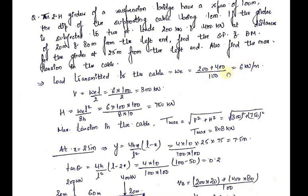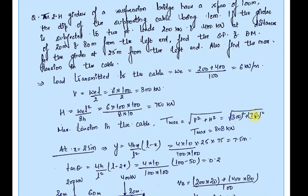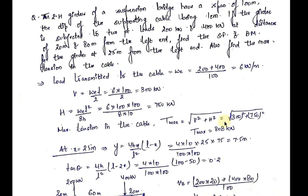From this value we can find V and H. V is the vertical reaction and equals WE·L divided by 2. H is the horizontal thrust calculated by the formula WE·L² divided by 8h, which comes out to be 750 kilonewtons. The maximum tension in the cable, T_max, equals the square root of V² plus H², giving a value of 808 kilonewtons.